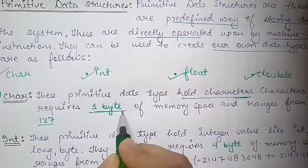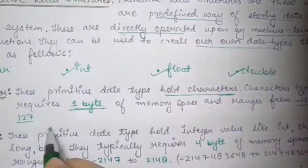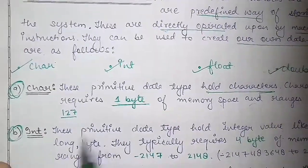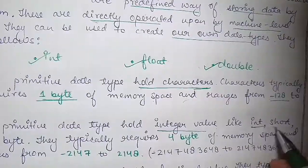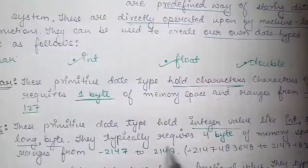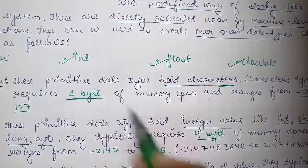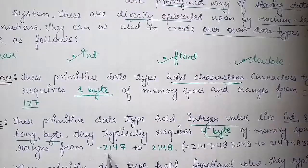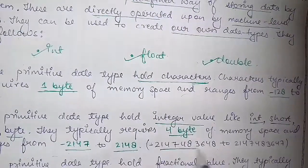What is integer? Int - these primitive data structures hold integer values like int, short, long, byte. They typically require 4 bytes. Character is 1 byte but int is 4 bytes of memory space and ranges from minus 2147 to 2148. This is the precise value if you can write it.